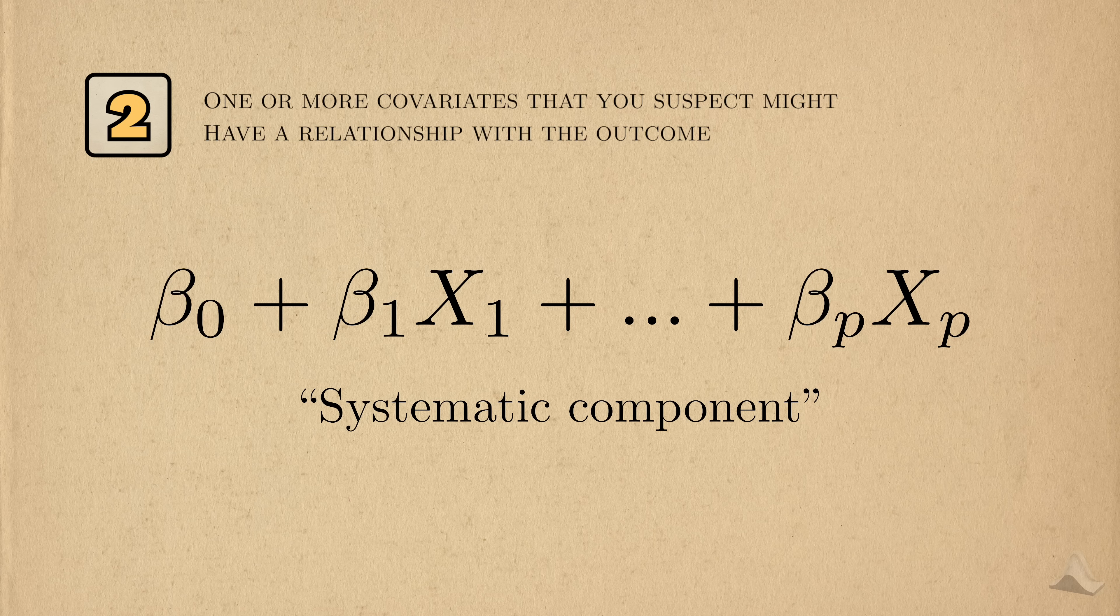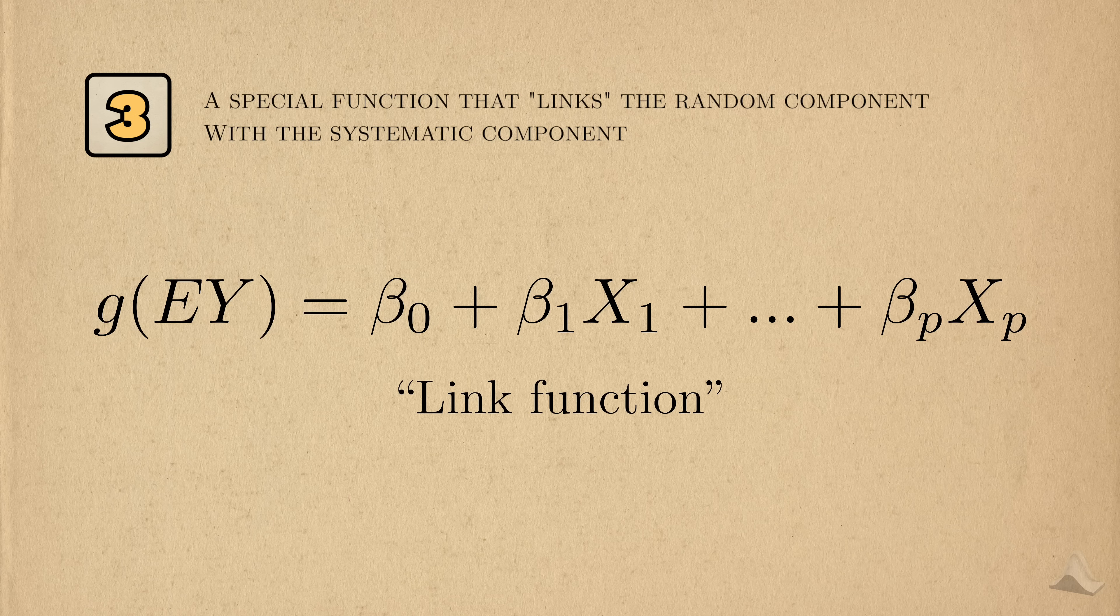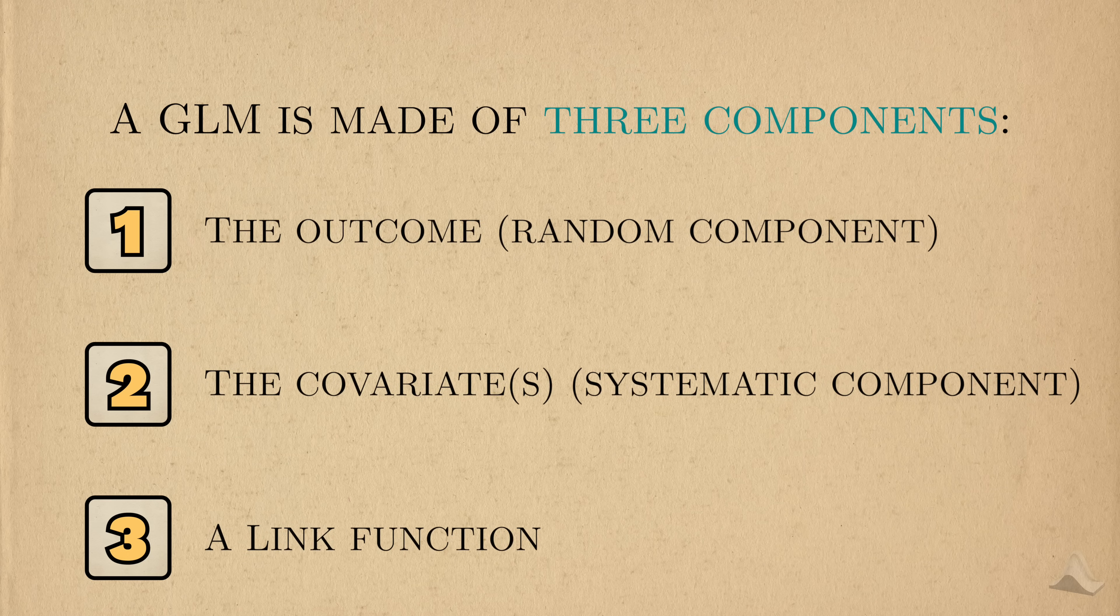Even though the covariates themselves can be seen as random variables, we usually consider them to be fixed values instead. And three, a special function that relates the random component with the systematic component. This function is called the link function, and its importance will become clear soon. Now that you know about the parts of a GLM, let's take a closer look.